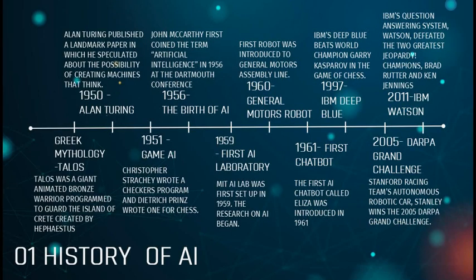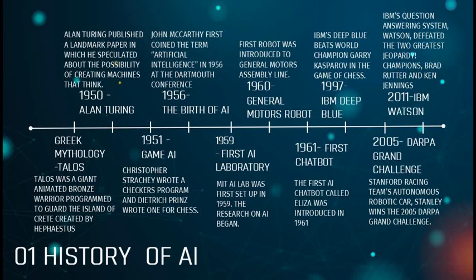The first topic is the history of AI. The concept of AI goes back to the classical ages in Greek mythology — the concept of machines and automatons. An example is Talos, who was supposedly a giant animated bronze warrior programmed to guard the island of Crete. Now let us get back to the 1950s.